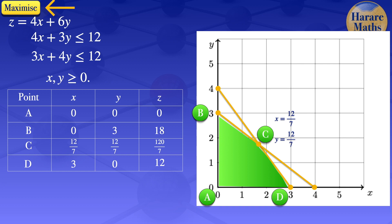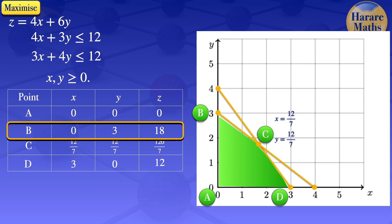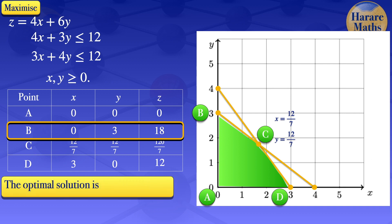In this problem we were maximizing, so we look for the largest value of z in that table. The largest value is 18, which occurs when x equals 0 and y equals 3. So that is our optimal solution. The optimal solution to the linear programming problem z equals 4x plus 6y subject to the given constraints is z equals 18, occurring when x equals 0 and y equals 3.